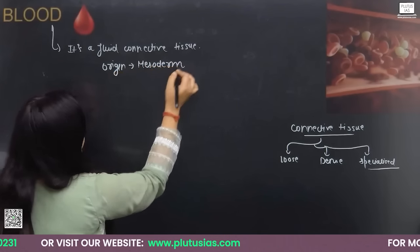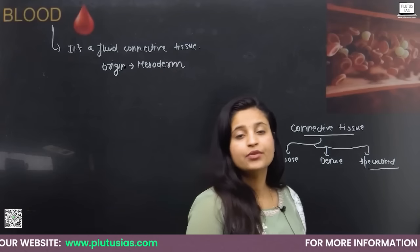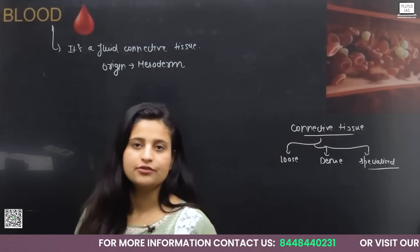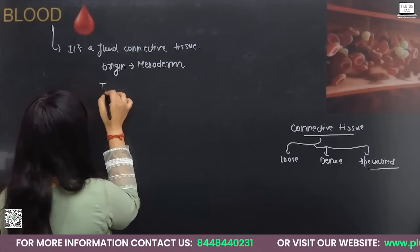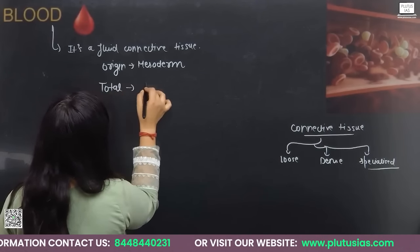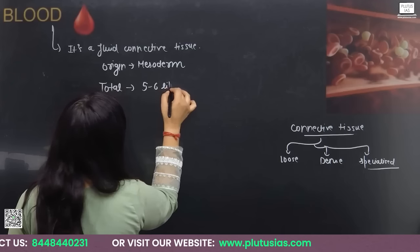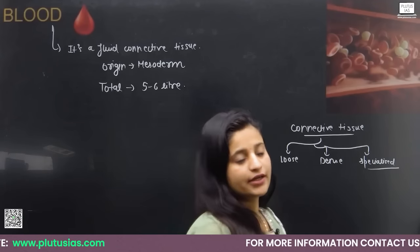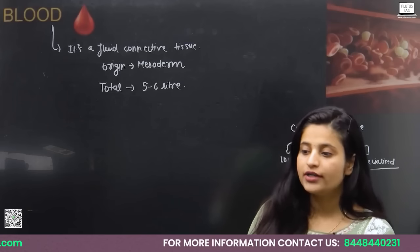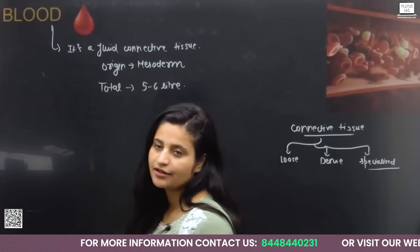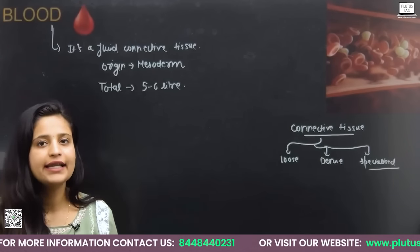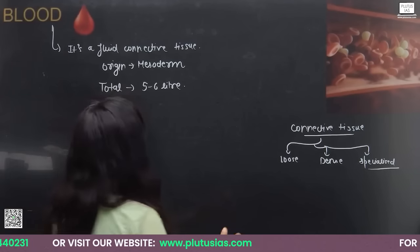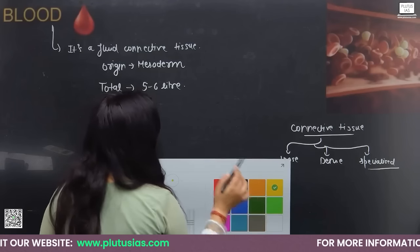How much blood do we have in our body? The total volume of blood in our body is five to six liters. The next point is: what is the pH of blood? Blood is slightly alkaline. The pH of blood is 7.4 plus minus 0.05.